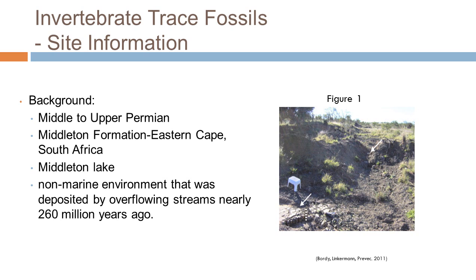An introduction to invertebrate trace fossils: trace fossils of both infaunal and epifaunal invertebrates were discovered in the Eastern Cape of South Africa. The fossils were found in an upper Middleton stratum consisting of mainly sandstone that perfectly preserved them. This finding shed light on the fact that anoxia may have been present in the oceans during this time, and therefore the levels of the bodies of water must have been deep enough so that sunlight did not reach the bottom. The way the trace fossils changed over time showed a strategy developed by the species to survive with high anoxia and low food levels.